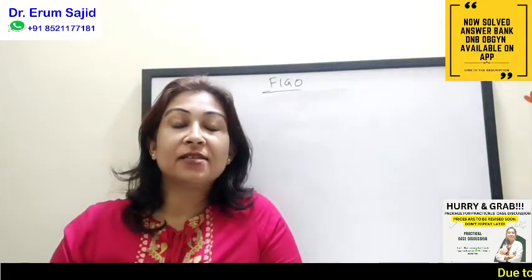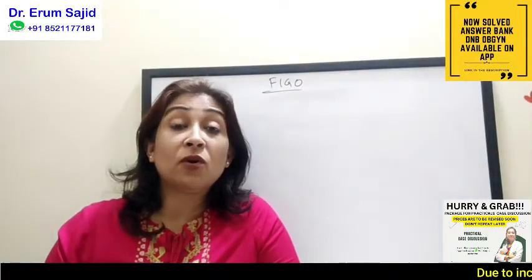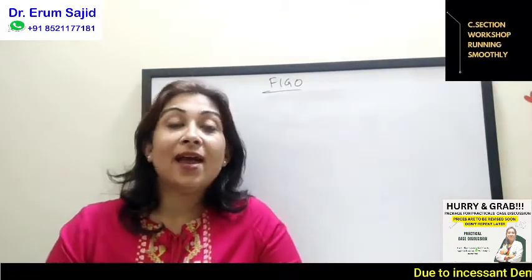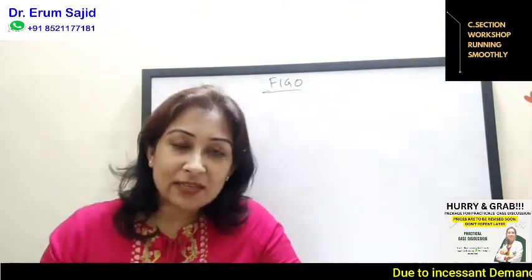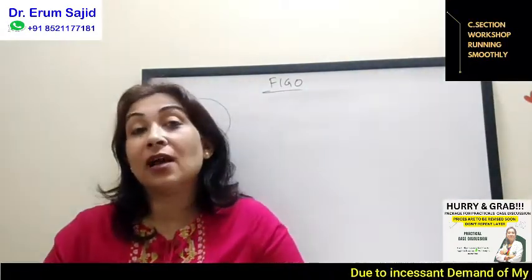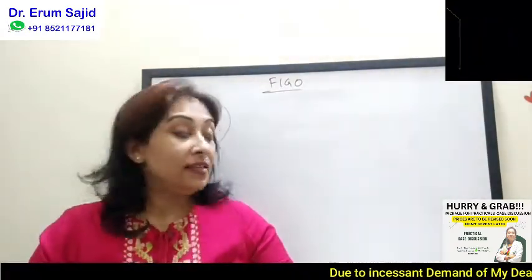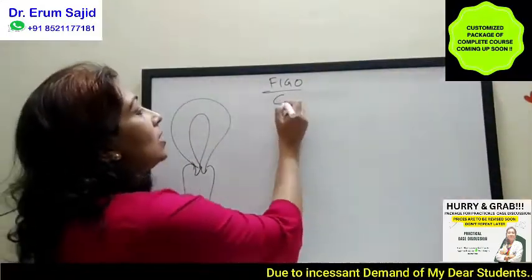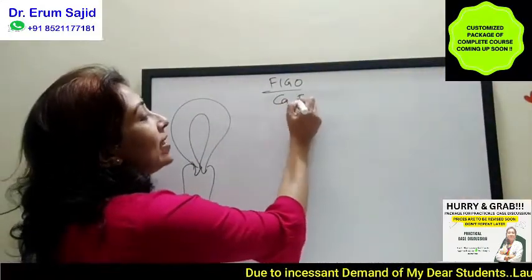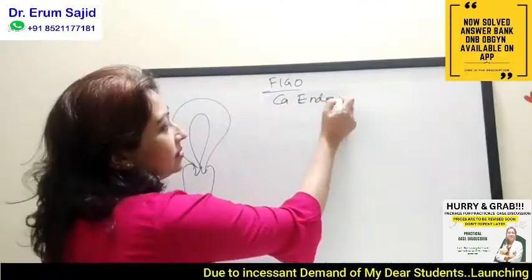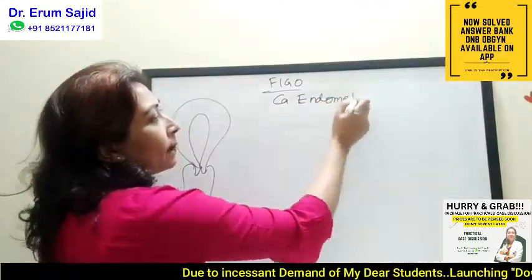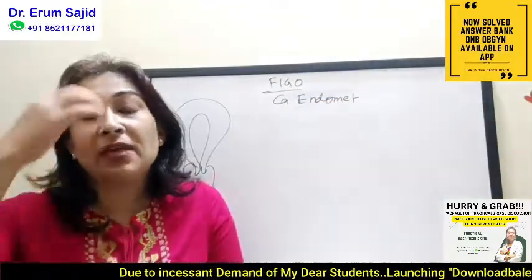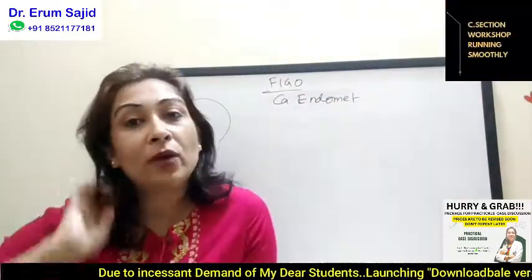Hello friends, these are classes for FIGO staging and classification made simpler, and now we are on the easiest classification which I kept for the last, and that is CA endometrium. Why is it so easy? Because if you apply logic, things will become far more easier to understand.